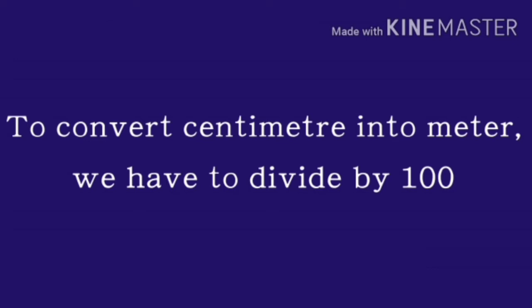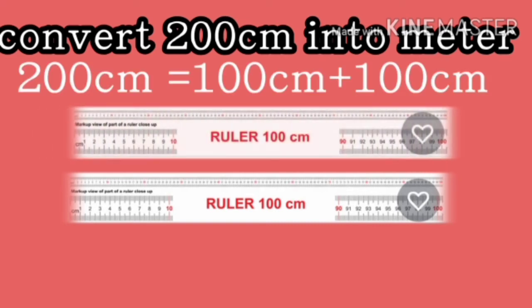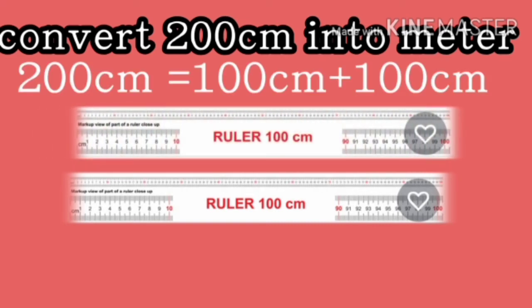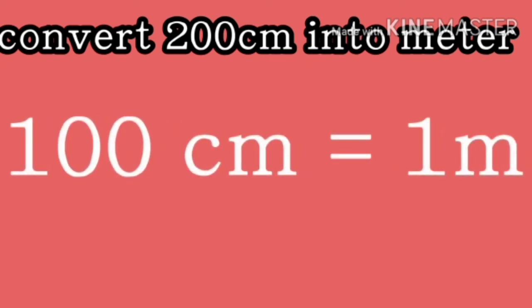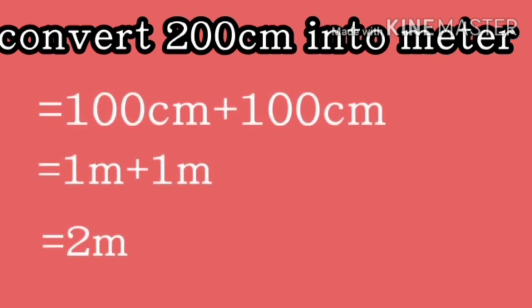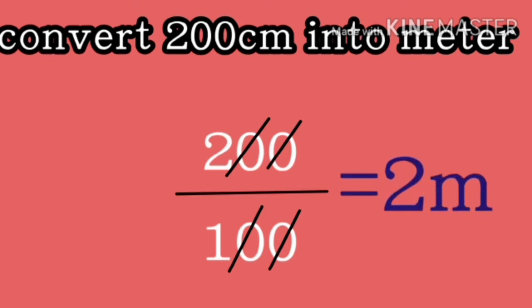Let us now convert 200 centimeter into meter. 200 centimeter is made up of 100 centimeter plus 100 centimeter. 100 centimeter is equal to 1 meter. So, 1 meter plus 1 meter is 2 meter. Or, we can just divide 200 centimeter by 100. Cancelling the zeros on numerator and denominator, we get the answer as 2 meter.